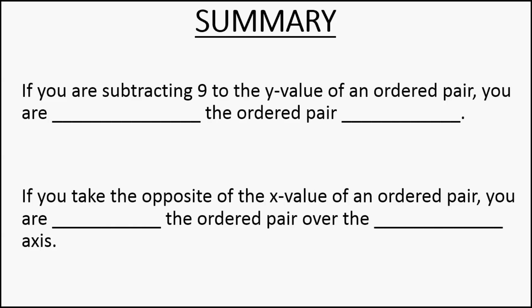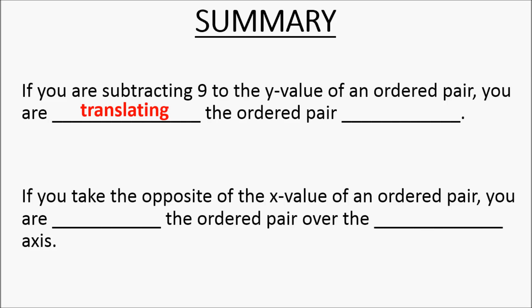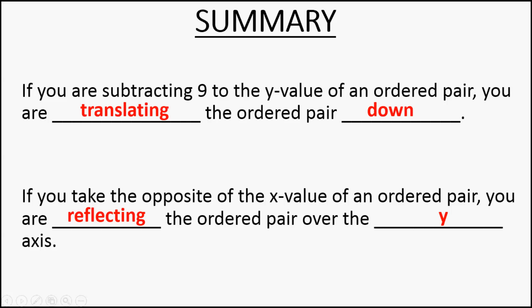One more summary slide. If you are subtracting nine from the y-value of an ordered pair, you are translating — and since we're dealing with the y-value and subtracting, that's a downward direction. So you are translating the ordered pair down; it's sliding down. If you take the opposite of an x-value of an ordered pair, that's a reflection. If we're doing opposite of x, that means y is staying the same, so we're reflecting that ordered pair over the y-axis. That's our summary. Best of luck on the homework.